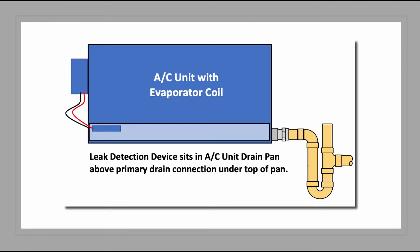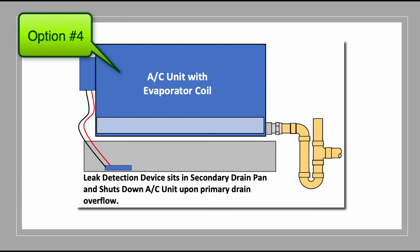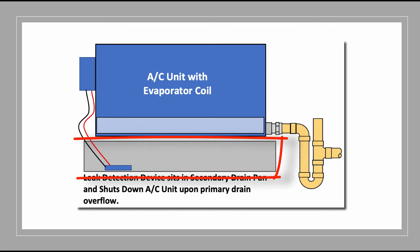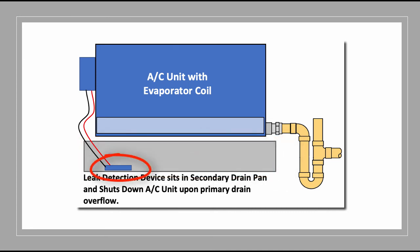Option four is similar. You'll put a secondary drain pan with a leak detection device on the bottom of the pan. If the primary pan overflows and starts to leak into the secondary pan, the secondary pan will catch it and the leak detection device will shut off the air conditioner from running any further. On that secondary drain pan, there is no secondary drain piping if you're using the leak detection device as the protection method to shut down the unit.